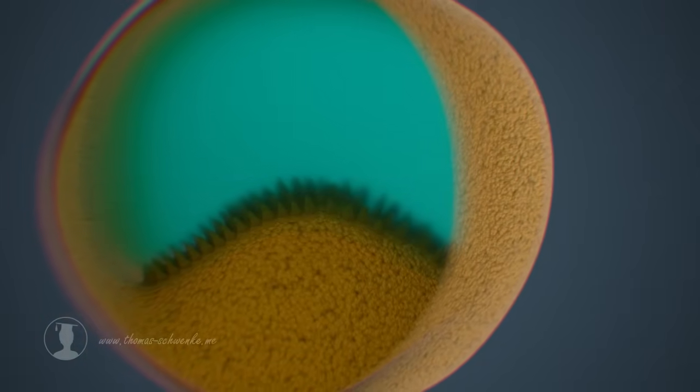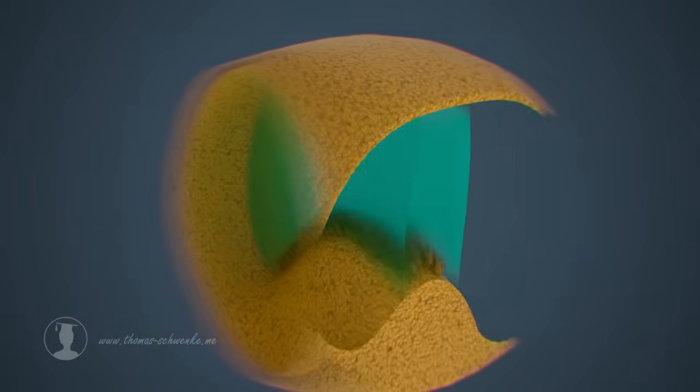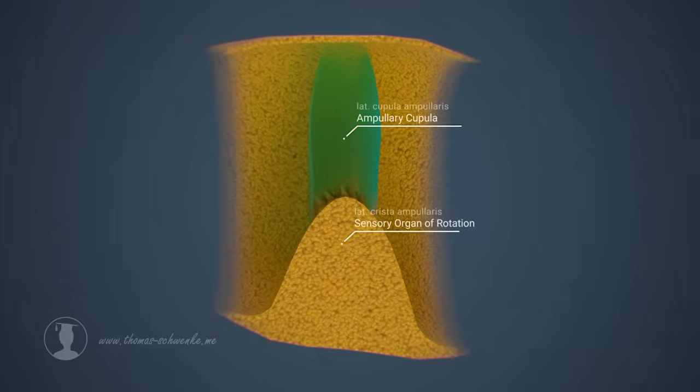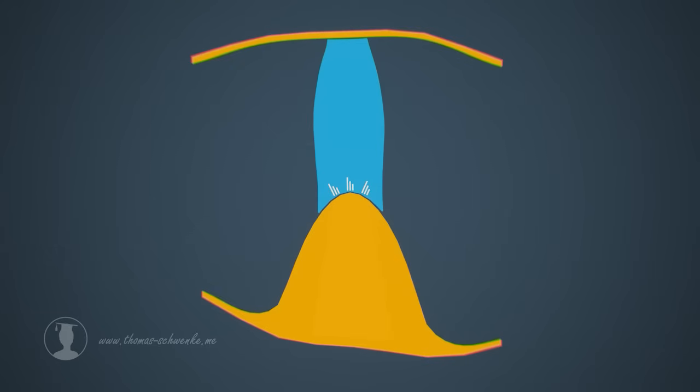To better understand how the ampulla works, let's take a look at it from the side. The cupula is a very soft tissue that will give way to slight over or under pressure. This causes the stereocilia of the hair cells to be deflected to the left or right. As with the hair cells in the utricle and saccule, the deflection of the stereocilia leads to the generation of action potentials, which reach the brain via nerve pathways.